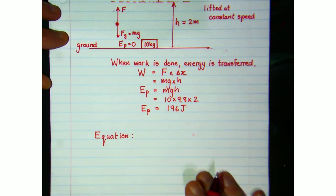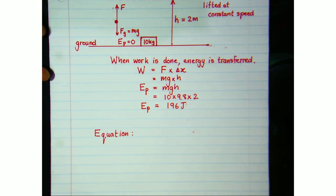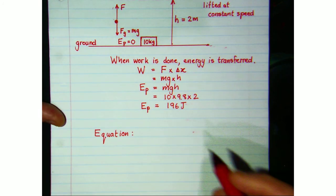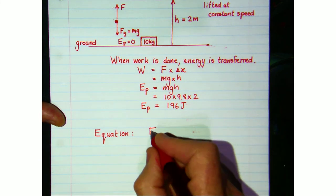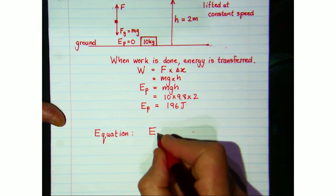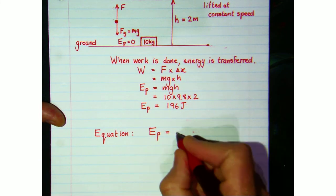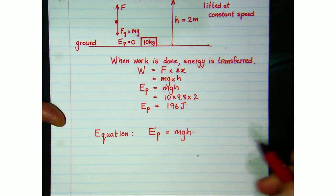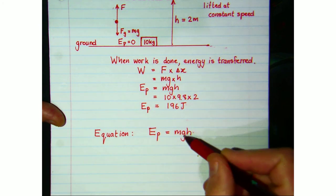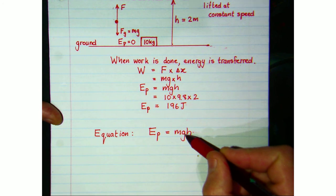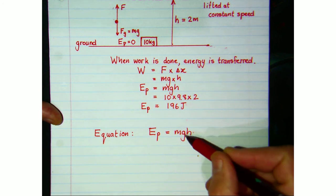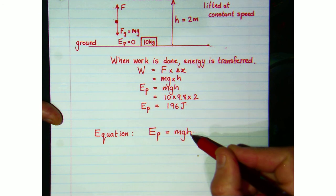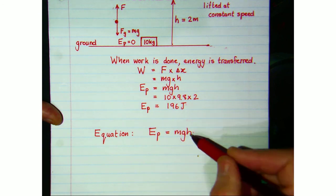If we look for an equation on the data sheet for gravitational potential energy, we would select EP = mgh. That's the mass of the object, g is the gravitational acceleration — on Earth that's 9.8 — and h is the vertical height above the ground.